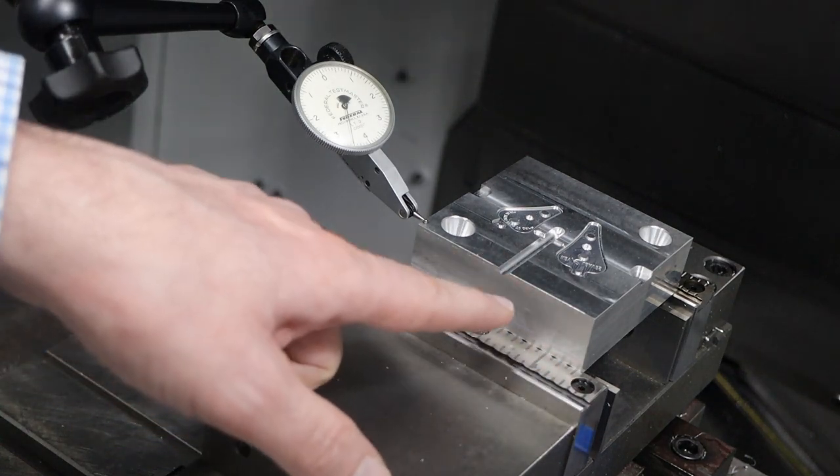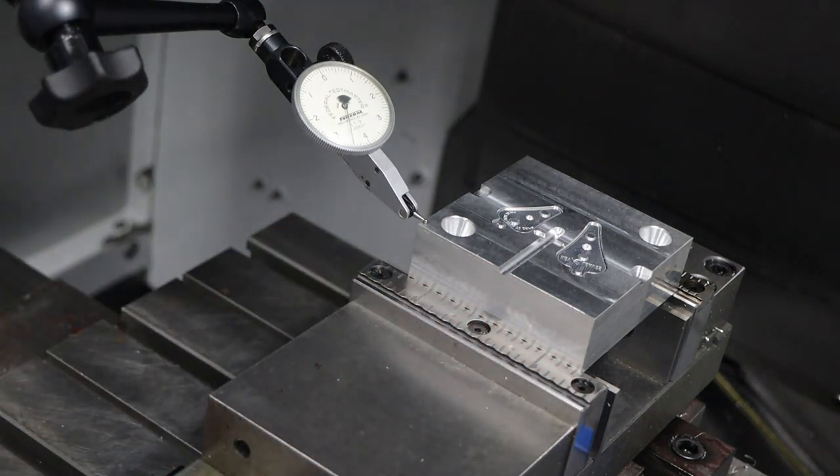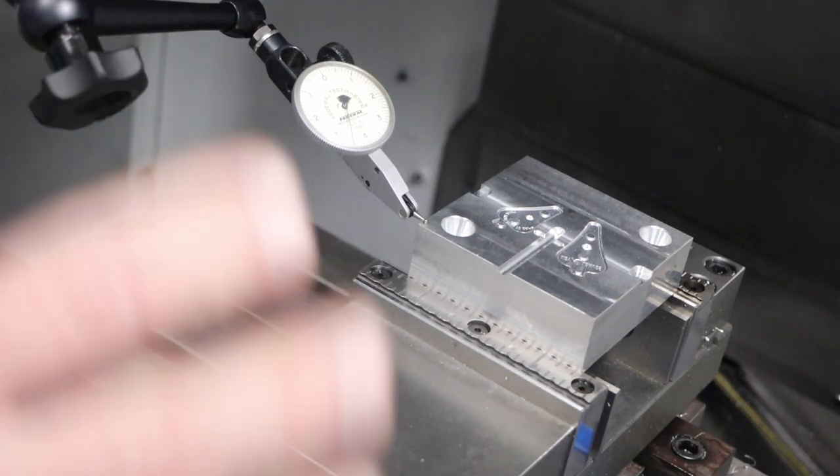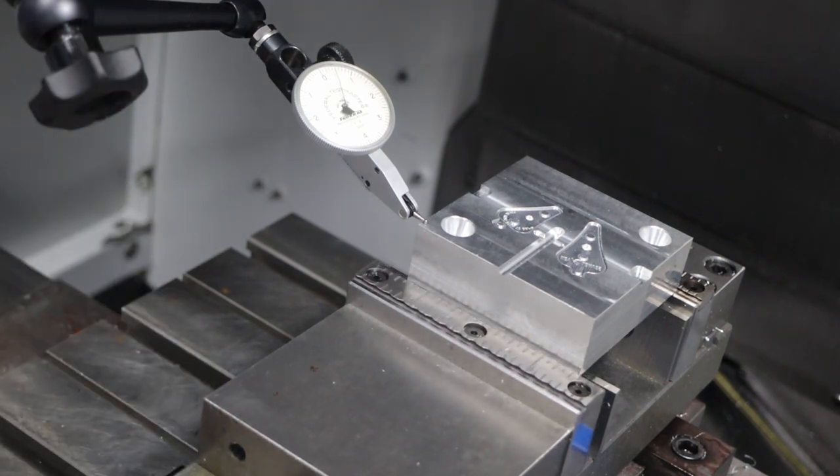As you'll see shortly, that will take care of most of the issue with the jaw lift. So you should only use the serrated jaws, which are going to have some jaw lift, for the first operation. So let me set this up so that we're using the parallels instead.